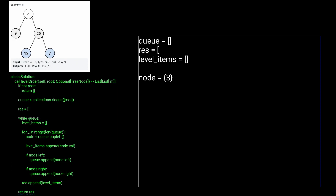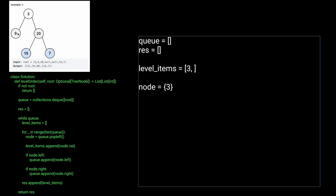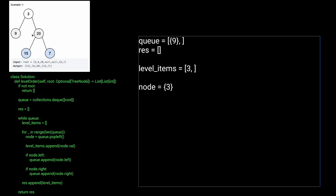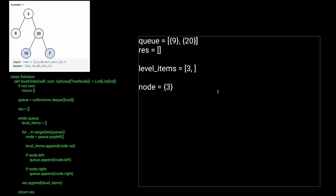We want to append its value to the current level_items, so level_items is going to have the value 3 — because we're putting node.val. Does node 3 have a left child? Yes, it does — it has node 9 — so we're going to append that left child to the queue. Does node 3 have a right child? Yes, it has node 20, so we put that into the queue as well. Now this for loop terminates because we only had to iterate one time. All we have to do is append to our result this level_items, so result is now going to store the list containing 3.